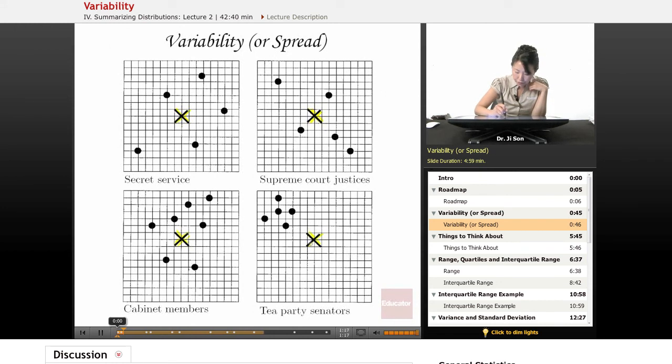And these are different groups of people that are standing with him at some sort of formal event. So here we see the Secret Service, and this is how far each of them are from him. Here we see the Supreme Court justices, and they're sort of scattered around him, spread out around him.